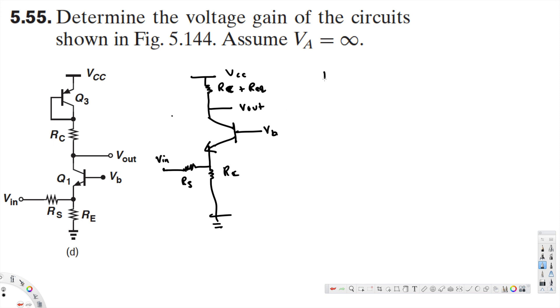Now let's calculate R equivalent. R equivalent equals 1 over GM3, parallel to RO3.